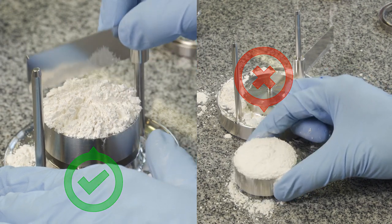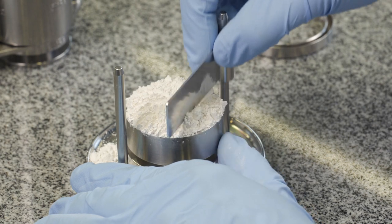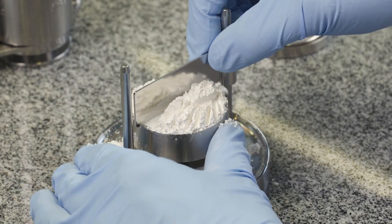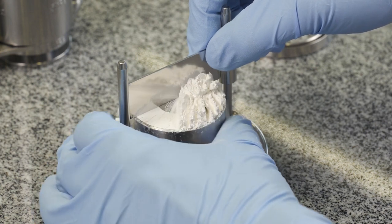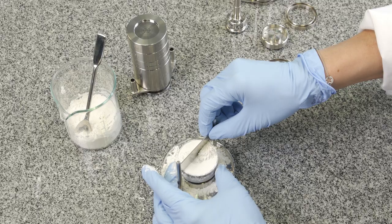Avoid compacting the powder by tapping it. Remove excess powder by first rotating the cup counterclockwise and then swipe off the excess powder with the scraper bar for a smooth surface.